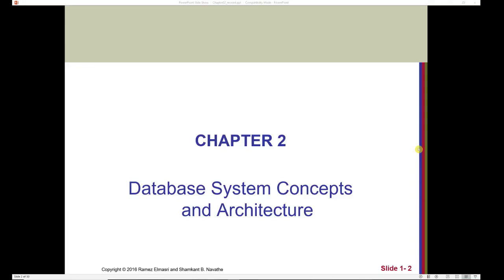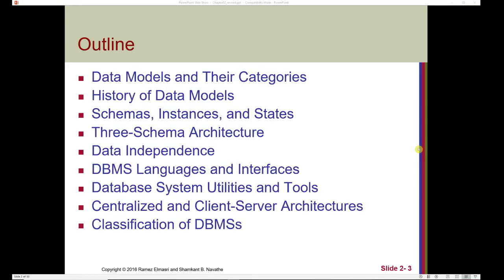Chapter 2, Database System Concepts and Architecture. In this chapter, we'll look at data models and their categories, a history of data models, schemas, instances, and states, the three-schema architecture, data independence, DBMS languages and interfaces, database system utilities and tools, centralized and client-server architectures, and a classification of database management systems.